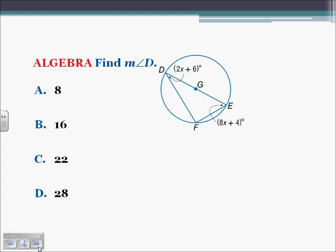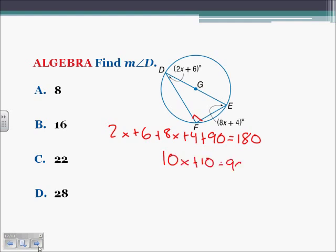To find the measure of angle D, all angles in a triangle add up to 180. Angle F is inscribed inside a semicircle, so it's a right angle. Therefore, 2x plus 6, plus 8x plus 4, plus 90 equals 180. Combining like terms: 10x plus 100 equals 180, so 10x equals 80 and x equals 8. Plugging back in for angle D: 2 times 8 plus 6 equals 22, so the answer is C.